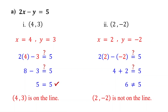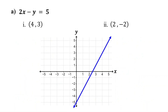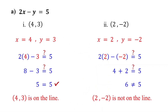We can confirm our answer by plotting the points. If we plot the point 4 comma 3, we will see that it is on the line. If we plot the point 2 comma negative 2, we will see that it is not on the line. But note that while graphing can provide a visual confirmation, it is not necessary to graph the equation and plot the point to determine whether it is on the line. The algebraic method is both sufficient and faster.